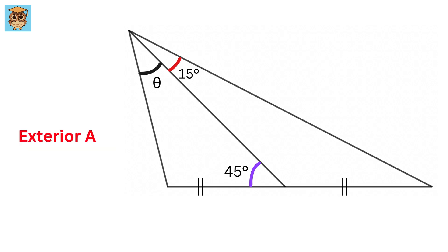Okay, first from the exterior angle property, this 45 will be equal to this angle plus 15 degrees. So, this angle will be 30 degrees.